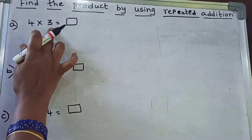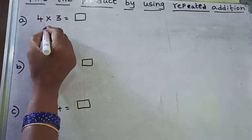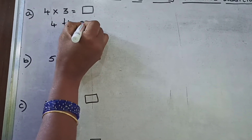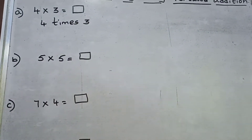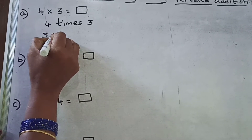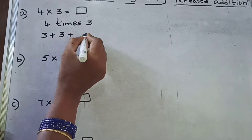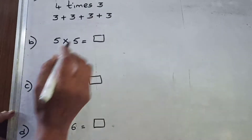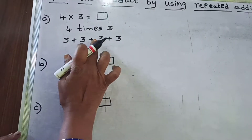So here, 4 threes are — you have to take 4 times 3. 4 times 3. So you have to take it 1 time, 2 times, 3 times, 4 times. So you have to take 3 four times: 1, 2, 3, 4.